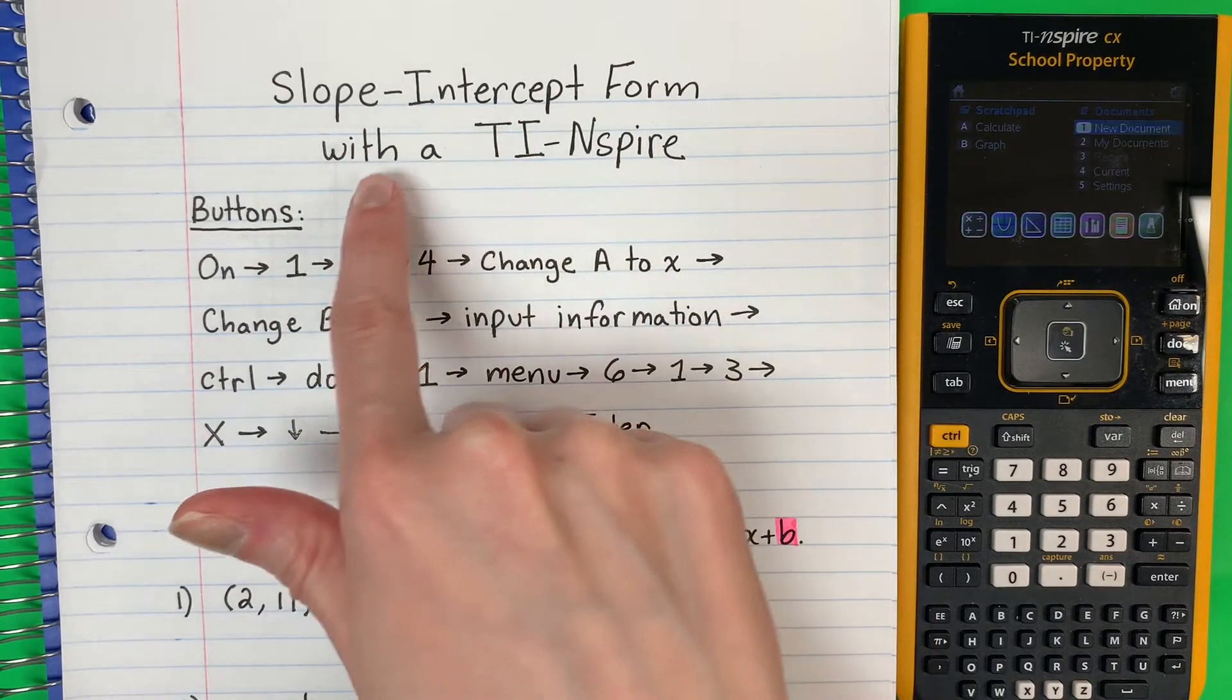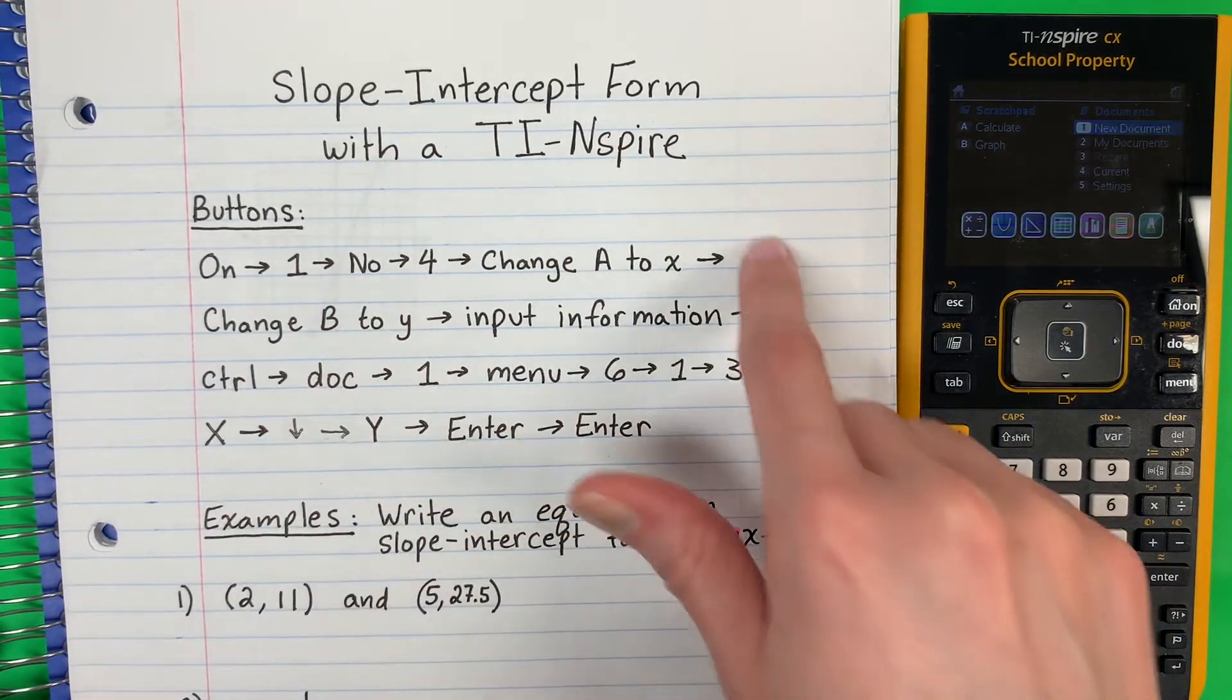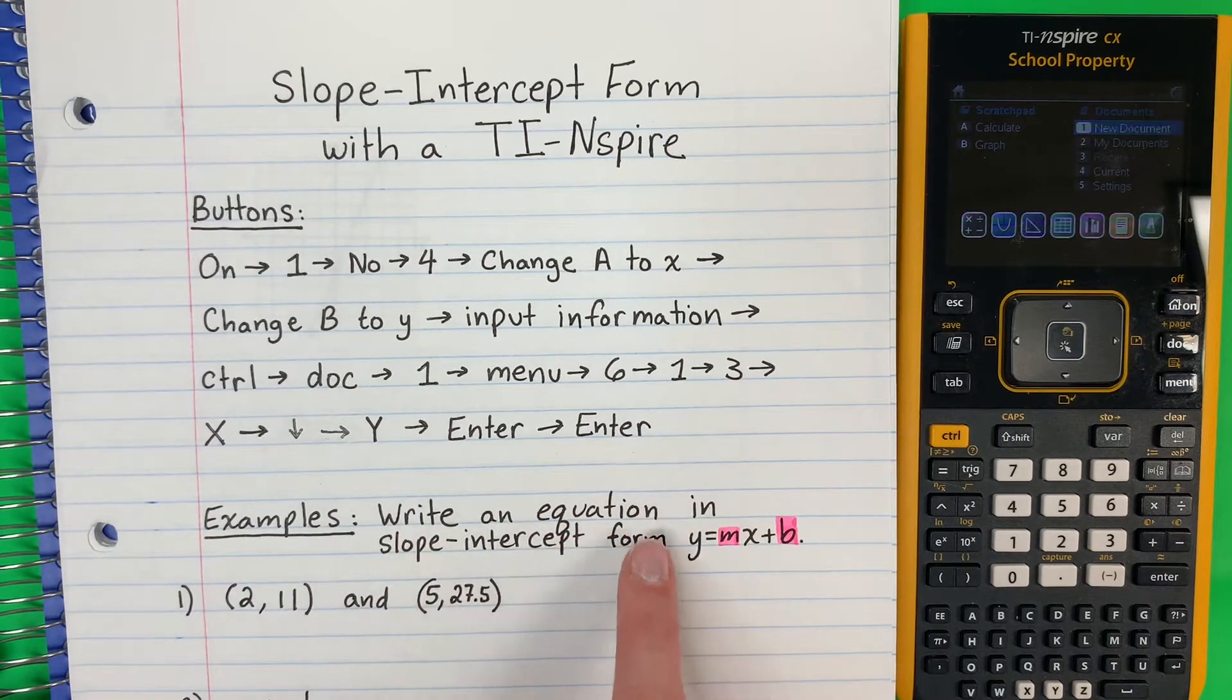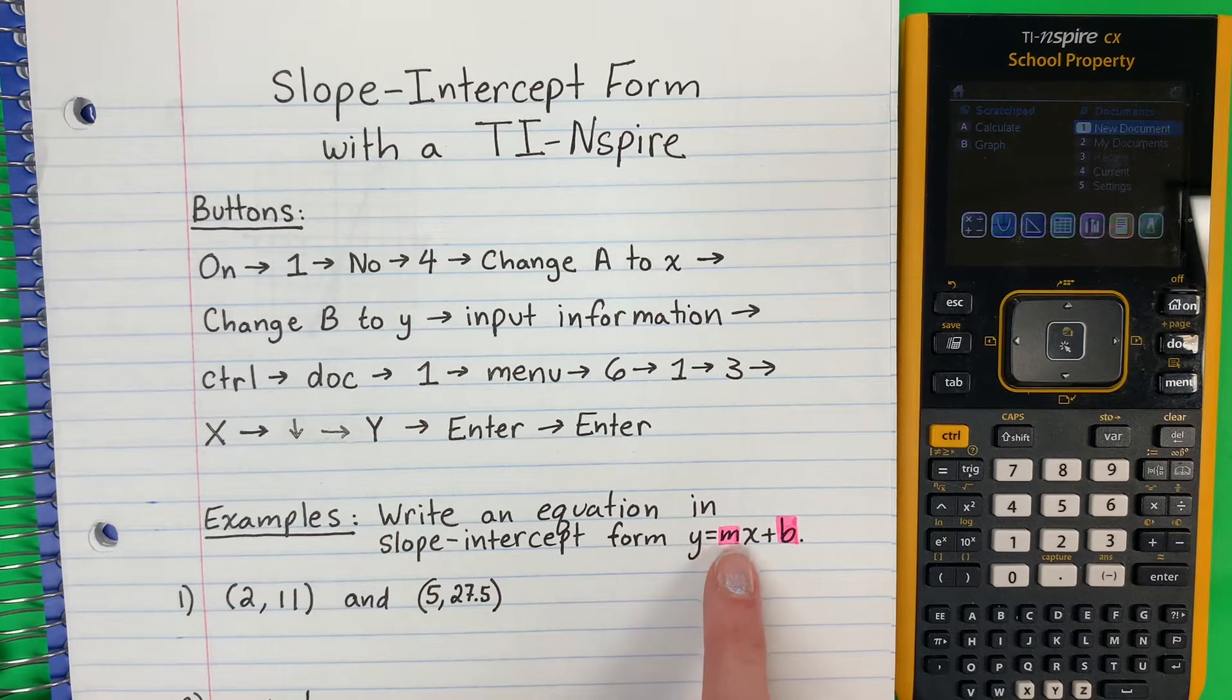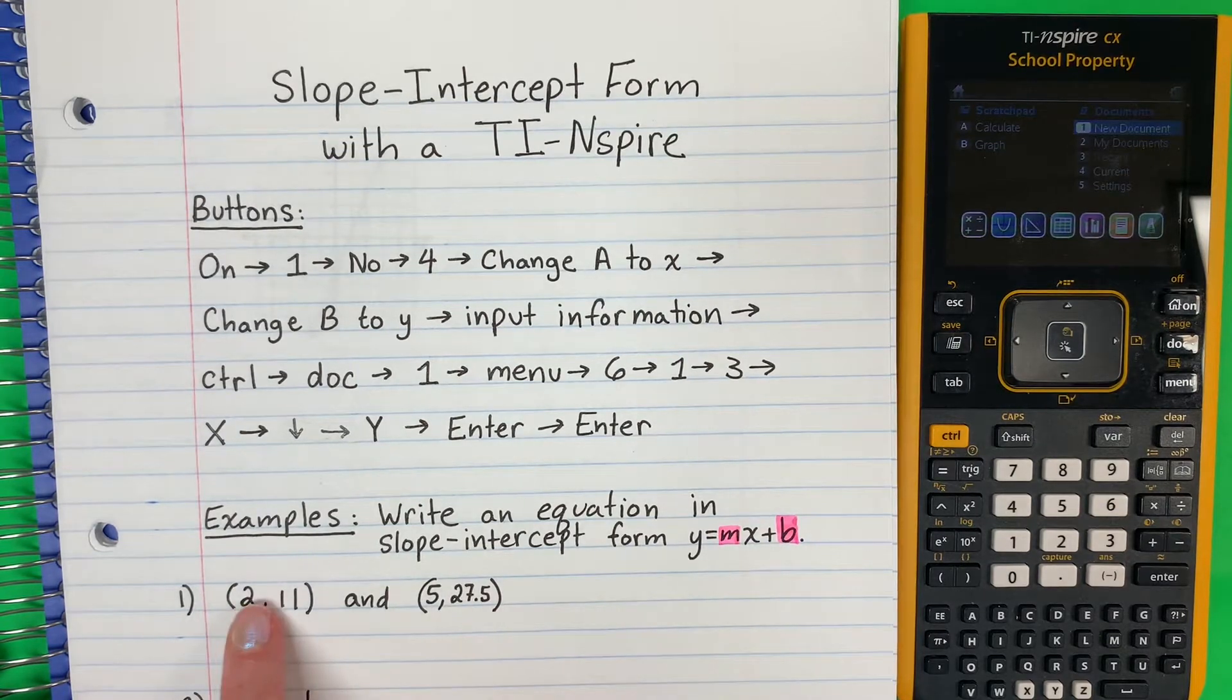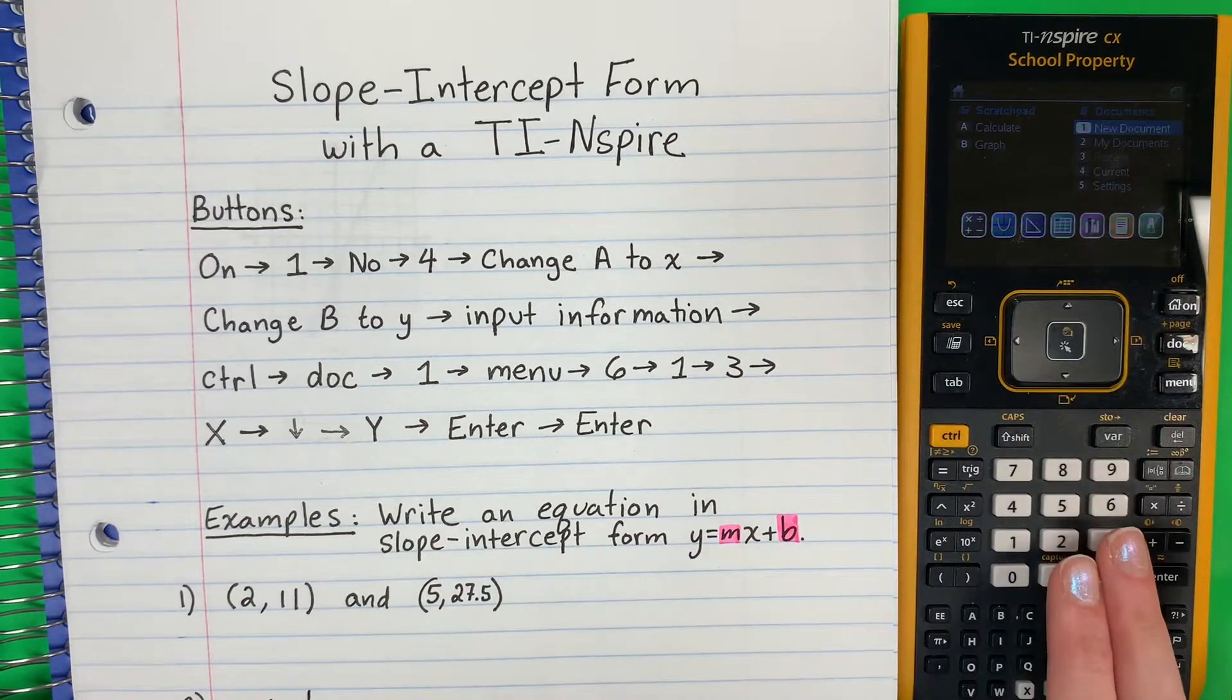Slope intercept form with a TI-Nspire. Here are the buttons for what we're about to do. Our instructions say write an equation in slope intercept form. Remember slope intercept form is y equals mx plus b, where m and b will be numbers. So here I have two ordered pairs. We're going to put it in this form using only our calculator.